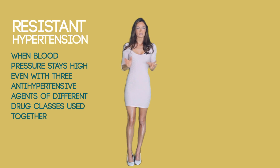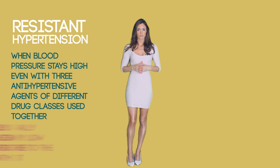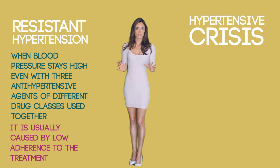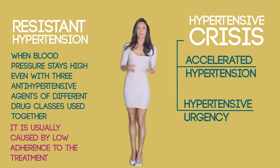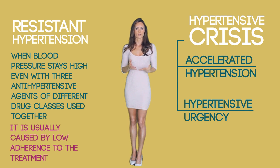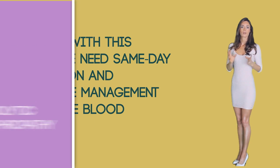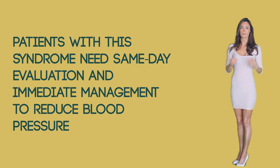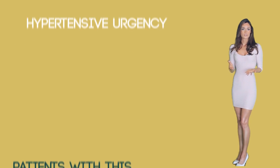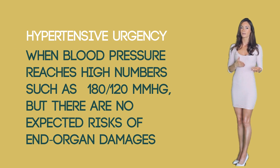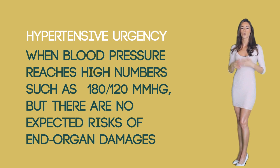Resistant hypertension is when blood pressure stays high even with three antihypertensive agents of different drug classes used together. It is usually caused by low adherence to treatment. Hypertensive crisis — accelerated hypertension, also known as hypertensive crisis or emergency, is when the blood pressure is extremely high, such as 200 over 130, along with end organ damage such as eclampsia, dissection, encephalopathy, pulmonary edema, papilledema, angiopathic hemolytic anemia, and/or nephropathy. Patients with these syndromes may need same-day evaluation and immediate management to reduce blood pressure within hours to minutes. Hypertensive urgency is when blood pressure reaches high numbers such as 180 over 120 but there is no expected risk of end organ damage, and needs to be managed by safely lowering blood pressure over a few days.